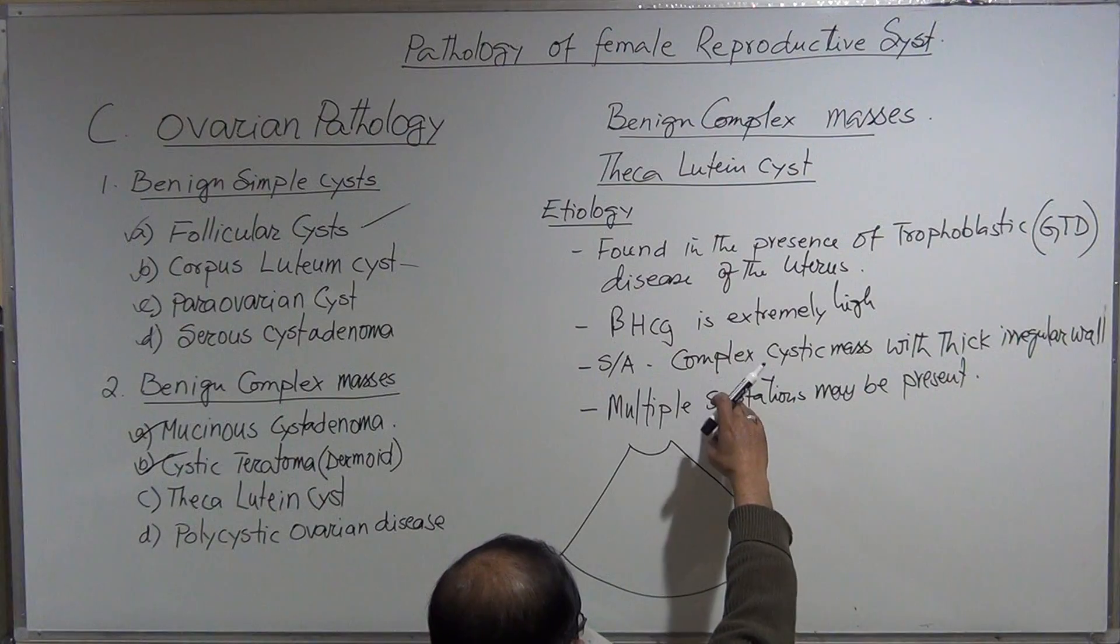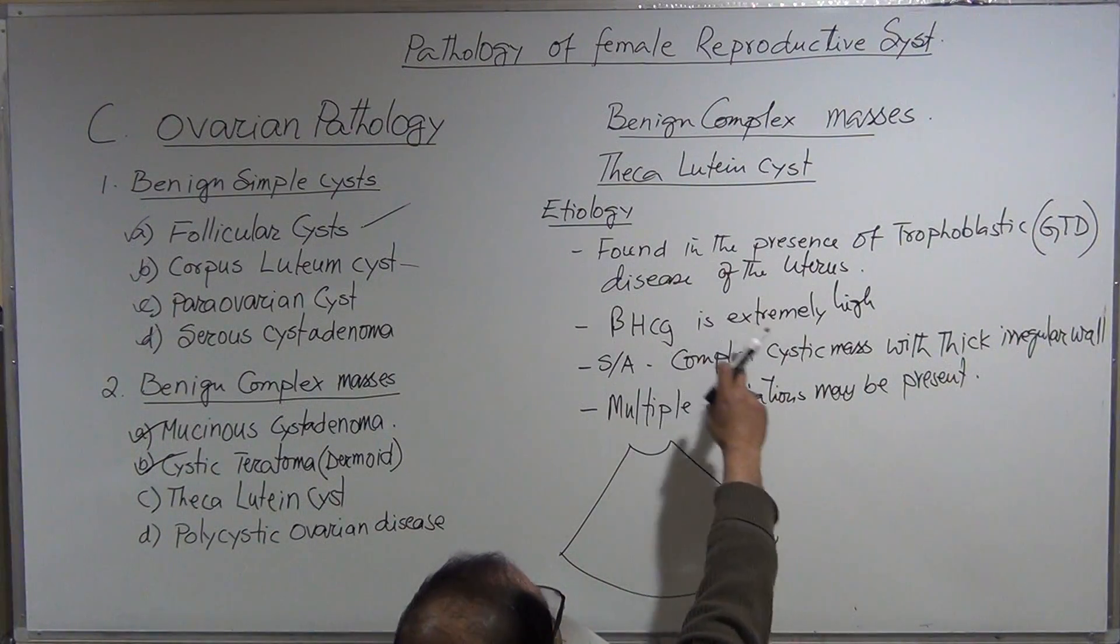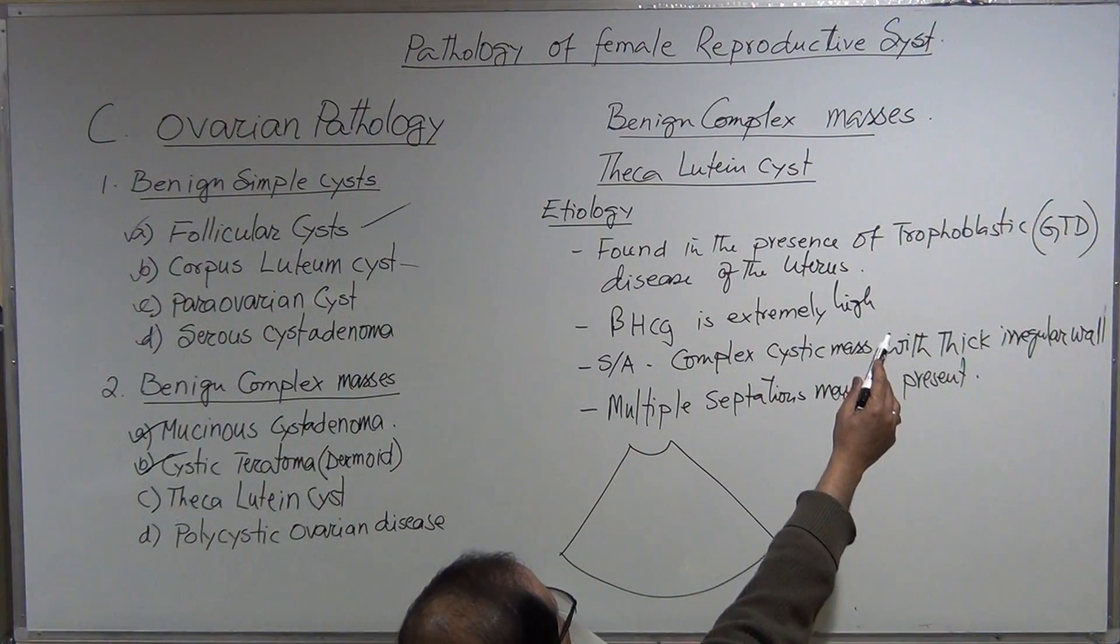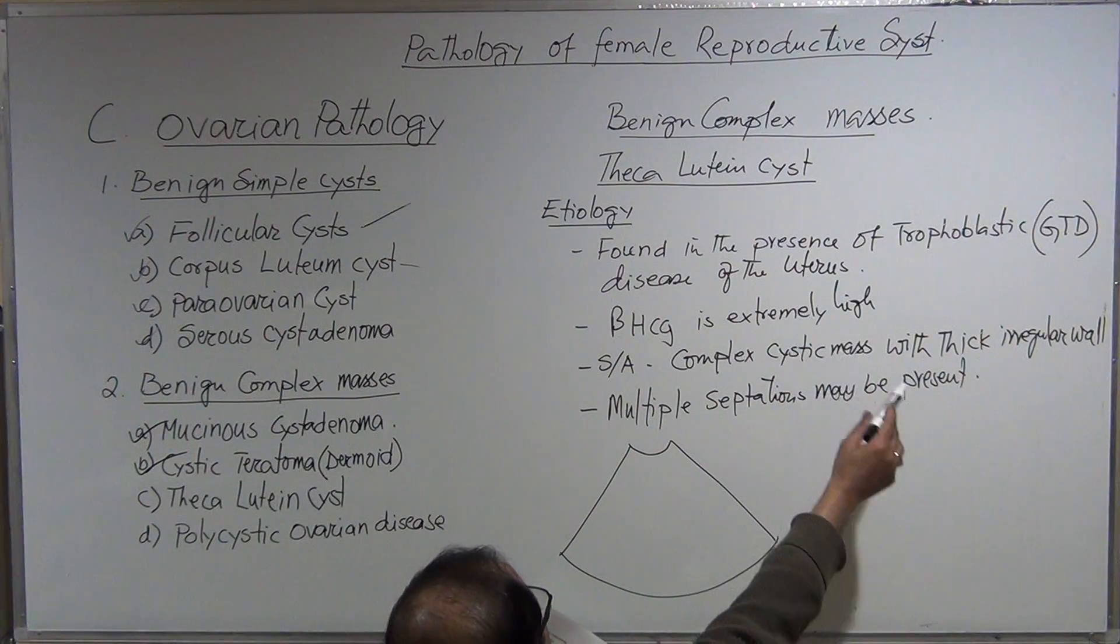When the beta hCG is positive in a female and is extremely high, you have to consider gestational trophoblastic disease. Then you need to check the ovary and expect the theca lutein cyst.